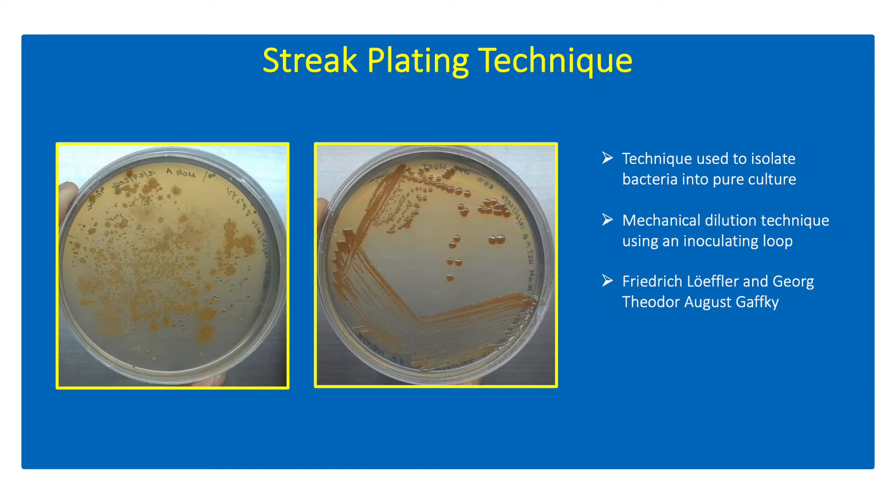Isolation of bacteria into pure cultures can be done using the streak plating method and swab method. Streak plating is a technique used to isolate bacteria into pure culture. It is a mechanical dilution technique using an inoculating loop to obtain single isolated colonies on the surface of an agar plate.